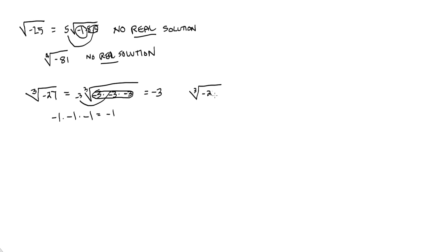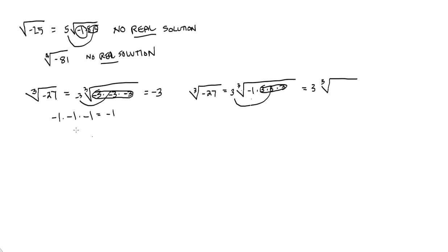Another way of looking at it: the cube root of negative 27 is negative 1 times 3 times 3 times 3. I can pull out a 3 because there are three 3s there. But I can also write negative 1 as negative 1 times negative 1 times negative 1 — as I showed you — which means I can also pull out a negative 1. So I still get the answer 3 times negative 1, which is negative 3.